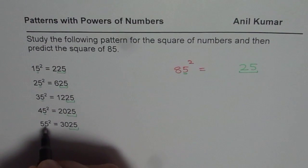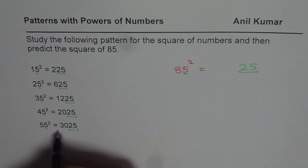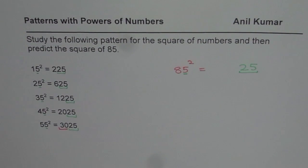Now we have to see what should be the first two digits. 85 means we are expecting two digits. What should be the first two digits? So try to find a pattern so that